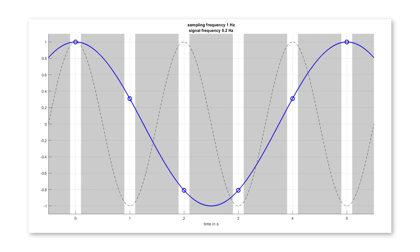Let's take a low frequency signal here with 0.2 Hz. You see the signal in real time with the solid blue line, and you see the values at the sampling instances indicated by the small circles.